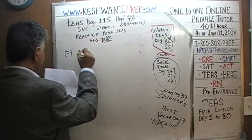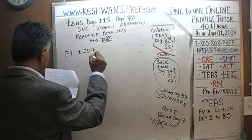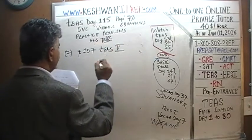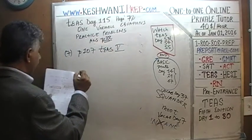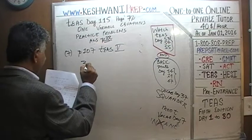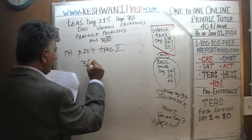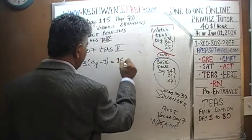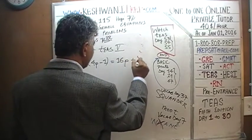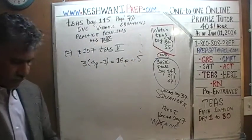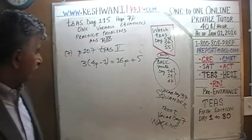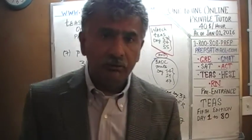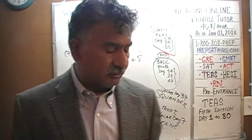Problem 7 appeared on page 107 in the 5th edition of the TEAS study manual. The problem is: 3 times the quantity 4P minus 1 equals 16P plus 5. If you can do it yourself, why not? Try it, see what happens — I'll give you five seconds to pause the video.